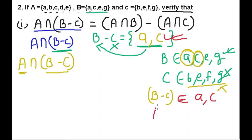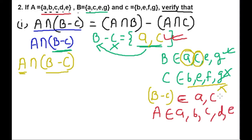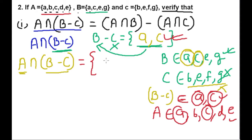Set A has elements A, B, C, D, E. The common elements between Set A and (B minus C) = {A, C} are A and C. Therefore, A intersection (B minus C) = {A, C}.